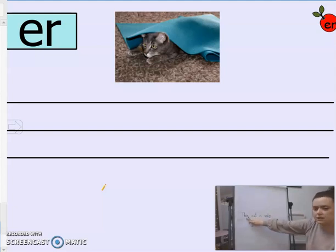Let's read it from the beginning to make sure it makes sense so far. The cat is under the rug. Okay. The rug. Make sure when you're doing your guh that it is hanging under the line, okay. Brilliant. And what do I need at the end of my sentence? A full stop to show that my sentence has finished. Lovely, right.